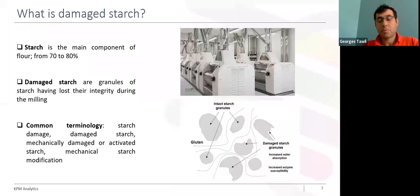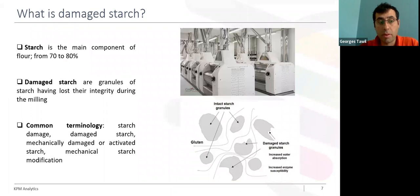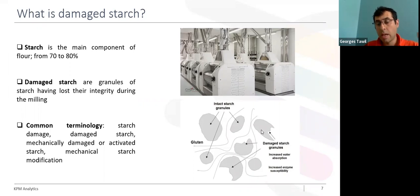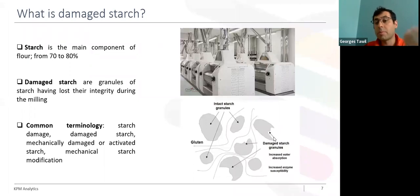As you may know, starch is the main component in wheat flour, representing between 70 to 80 percent of the flour. Damaged starch granules have lost their physical integrity during the milling process. Looking at this schematic, we represent intact starch granules in their original form and shape, and compared to those, the damaged starch granule has lost part of its initial shape — so it becomes damaged starch.